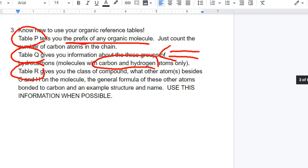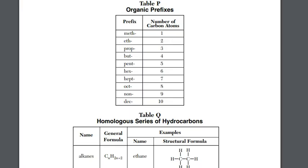Table Q is all about hydrocarbons, carbon and hydrogen atoms only. We just went through that alkanes are saturated, and alkenes and alkynes are unsaturated hydrocarbons. And then there is reference table R. That gives you a list of other classes of compounds that have some other elements that are part of the compound.